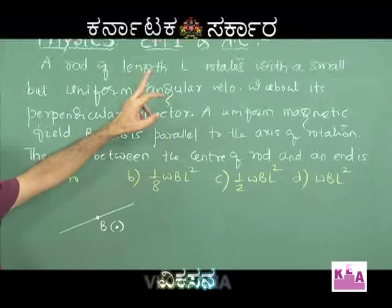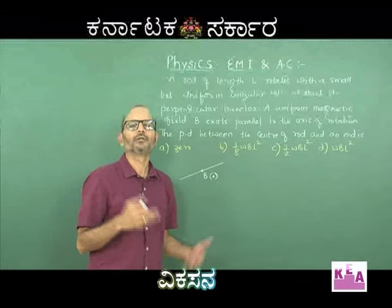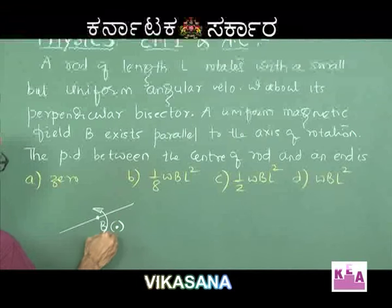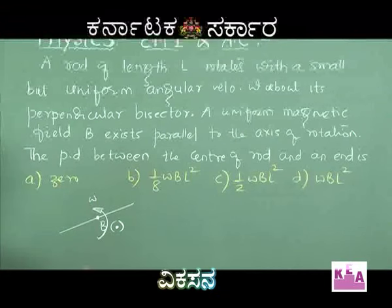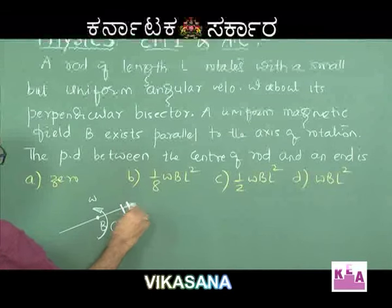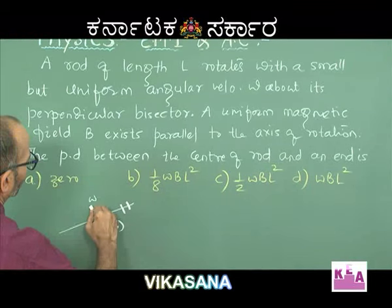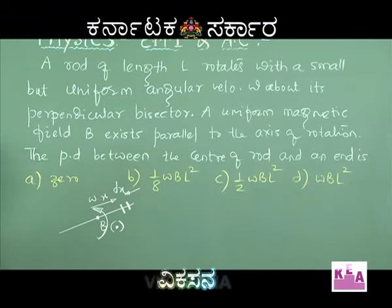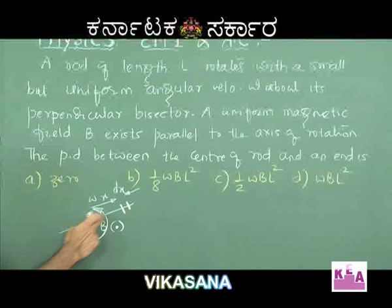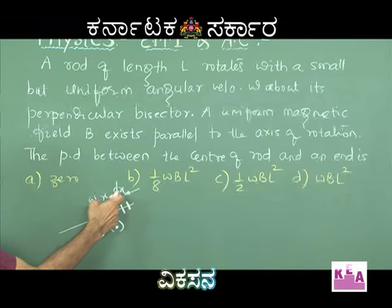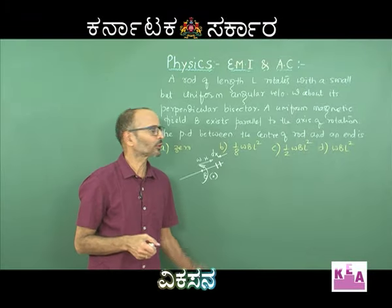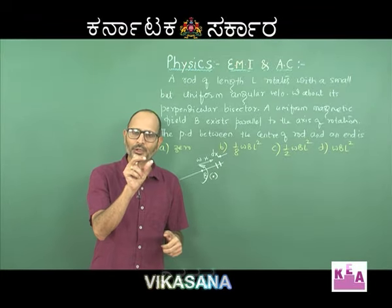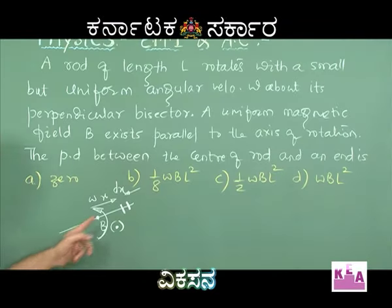He has not told you whether the angular velocity is clockwise or anticlockwise — we will consider it to be anticlockwise. Now, consider one small element of the rod taken at a distance x from the center, with length dx. The element has been chosen at a distance x from the centre of the rod and the length of the element is dx. The given rod has only length, not a specified cross-sectional area, so the element also has only a length.